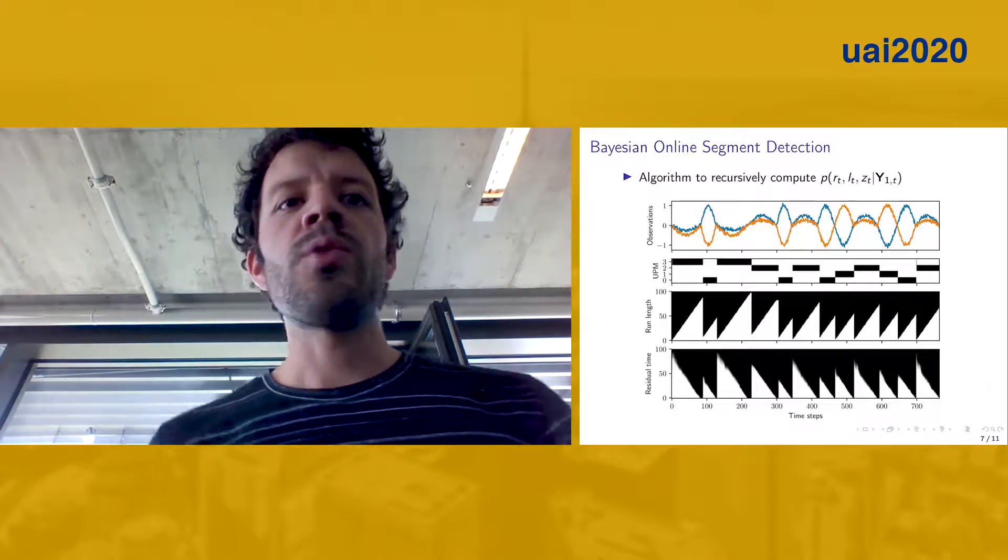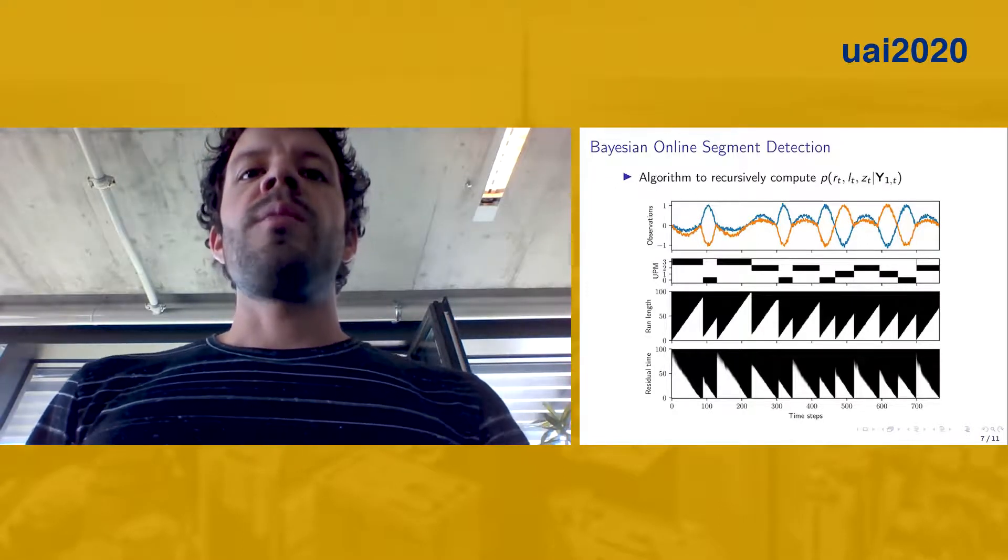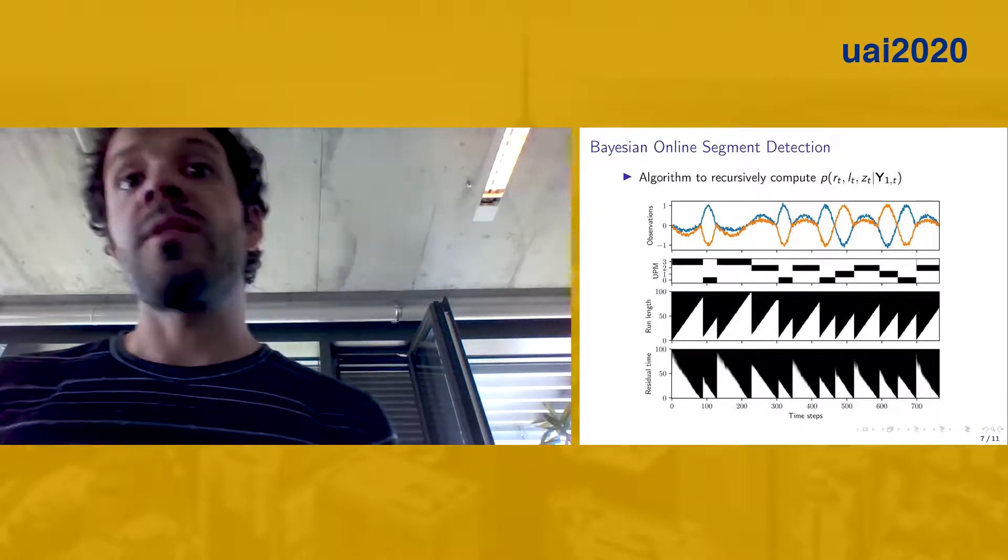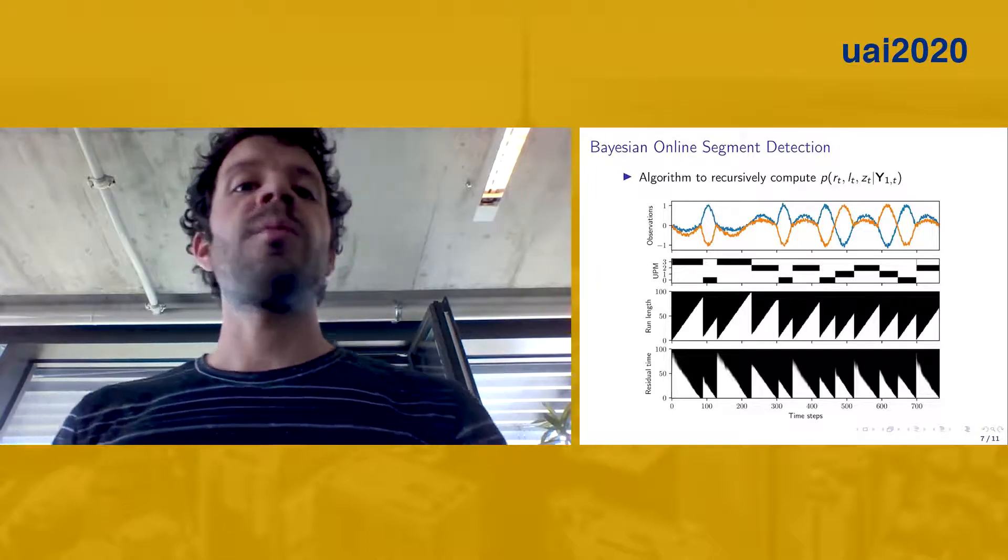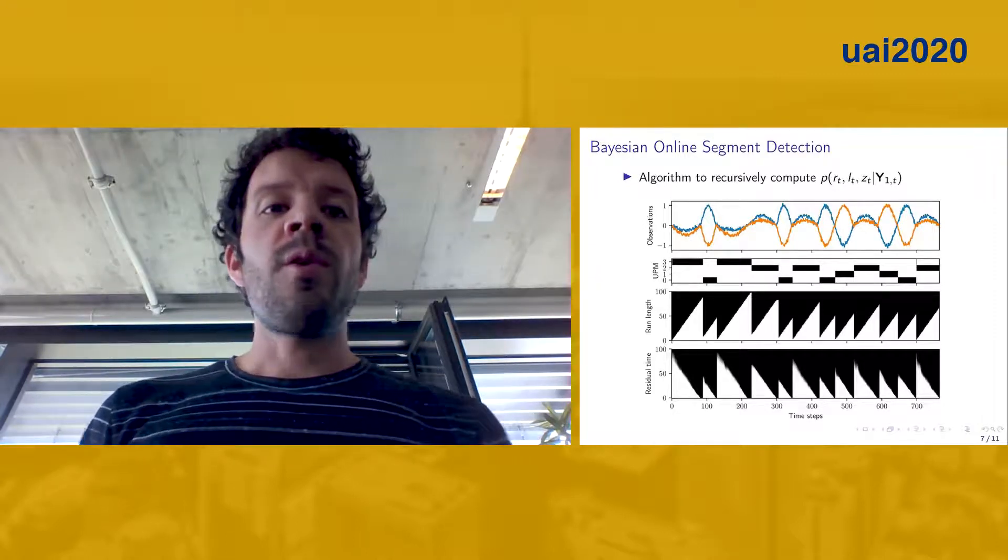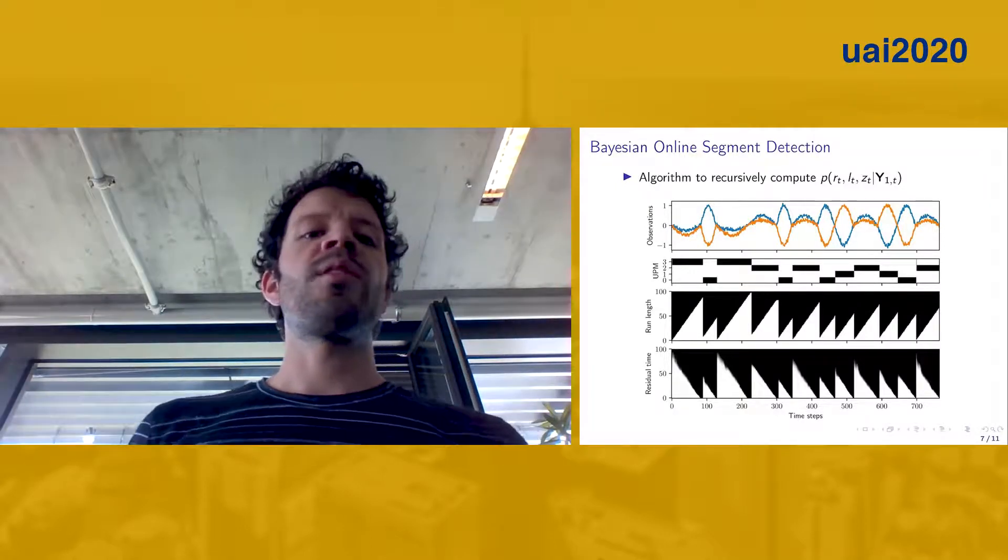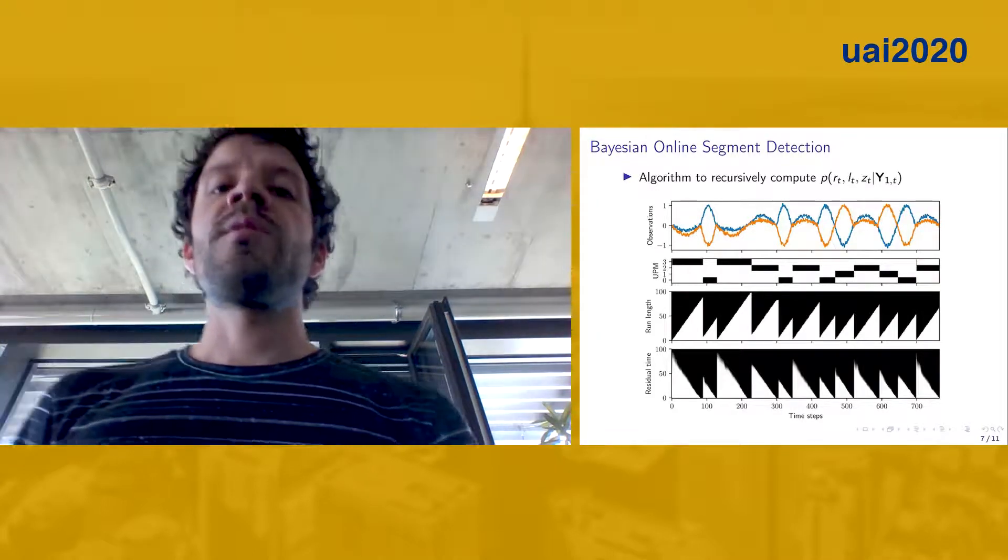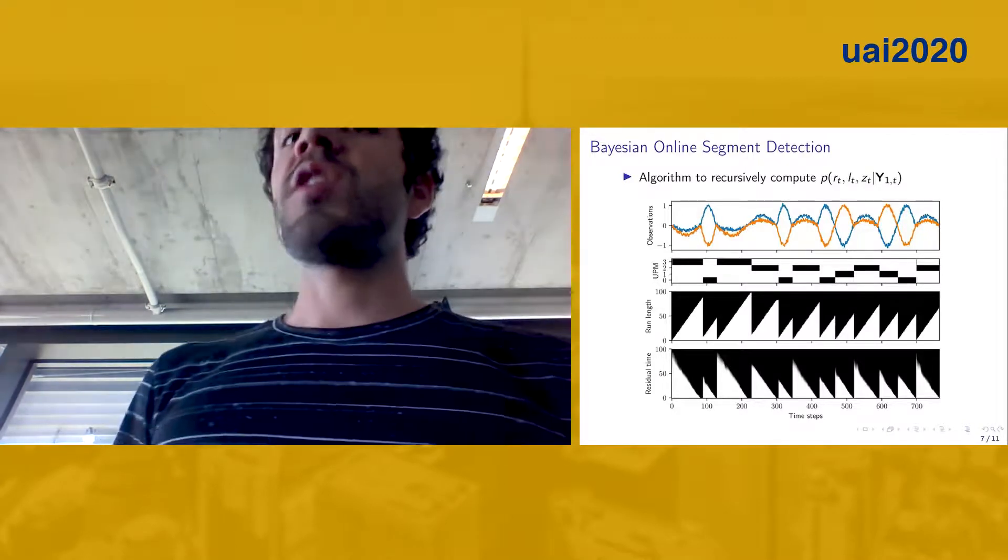In the second row, you see the inference over the hidden state set, and it tells us basically which underlying predictive model is active at a particular time step t. Each column in this case is a probability mass function. On the third row, we see the previously introduced run-length posterior, and finally, more importantly, we have the residual time posterior, which now enables us to infer when the next change point will happen.